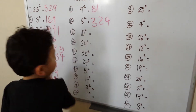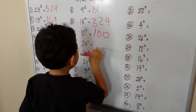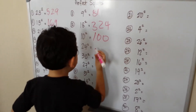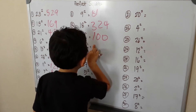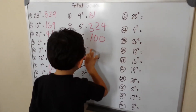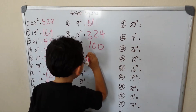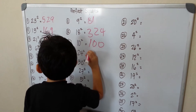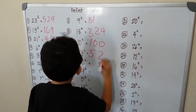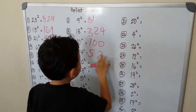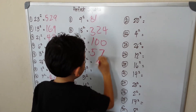18 squared is 324. 10 squared — okay, let me think — I think that will be 500... 576.